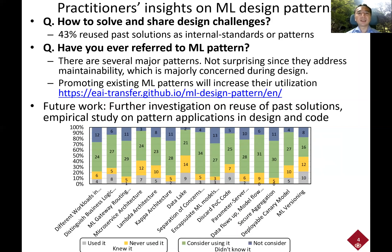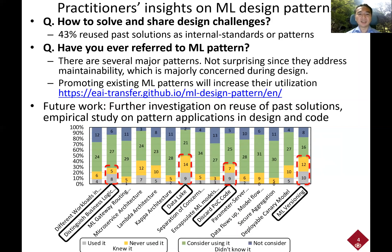However, there were several patterns that were more recognized, such as distinguishing business logic, data lake, discard proof-of-concept code, and machine learning versioning. It is not surprising since they address maintainability, which is a major concern during design of machine learning software systems. We believe that promoting existing machine learning patterns will increase their utilization, so we created a website to promote those patterns.